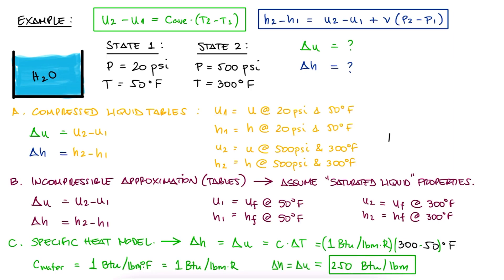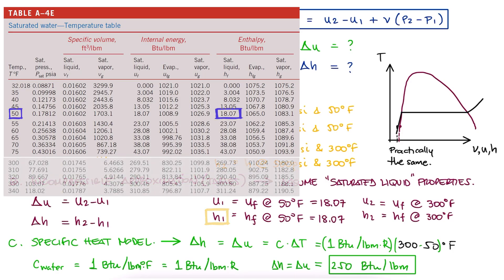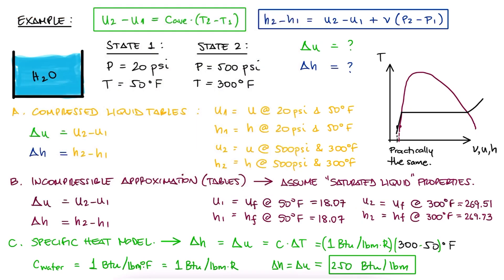For the second method, we assume that the internal energy and enthalpy of a compressed liquid are so close to those of saturated liquid that their values are the same. This means that u1 is uf at 50 degrees Fahrenheit, h1 is hf at 50 Fahrenheit, u2 is uf at 300 Fahrenheit, and h2 is hf at 300 Fahrenheit.